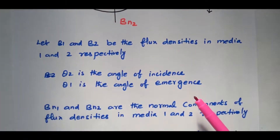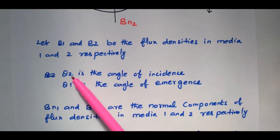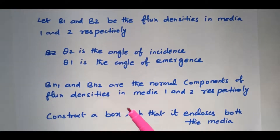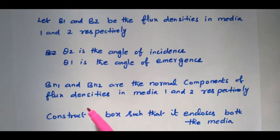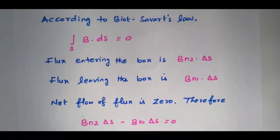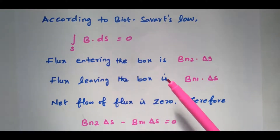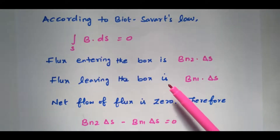B1 and B2 are the flux densities in media 1 and 2 respectively. Theta2 is the angle of incidence and theta1 is the angle of emergence. BN1 and BN2 are the normal components of flux density vector in media 1 and 2 respectively. We construct a box that encloses both media. We will analyze this according to Biot-Savart's law, where the integral of B dot dS equals zero.